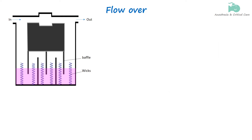A flow-over vaporizer is designed to efficiently convert liquid anesthetic agents into vapor by utilizing the flow of a carrier gas, typically oxygen or nitrous oxide. The carrier gas is introduced into the vaporizer, flowing over the surface of the liquid anesthetic agent. As the carrier gas flows over the anesthetic, it picks up vaporized anesthetic molecules, creating a mixture that is delivered to the patient.